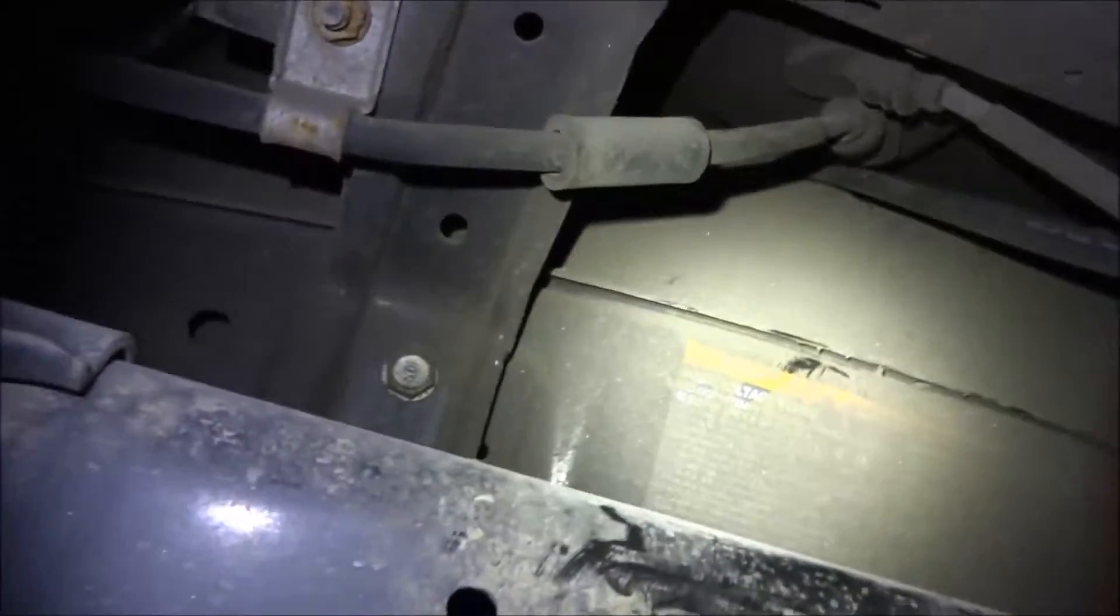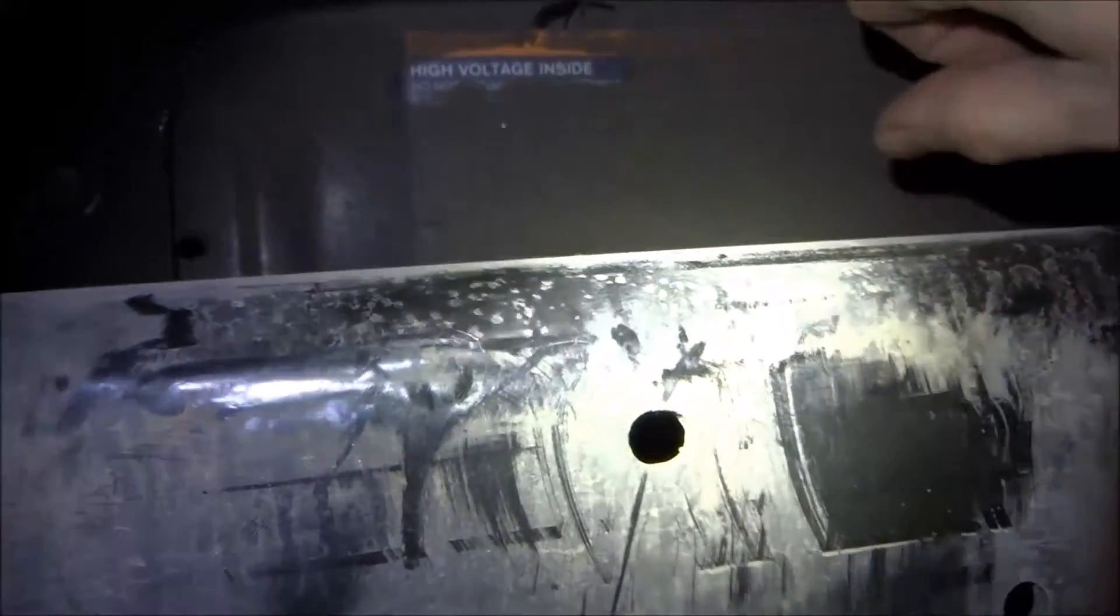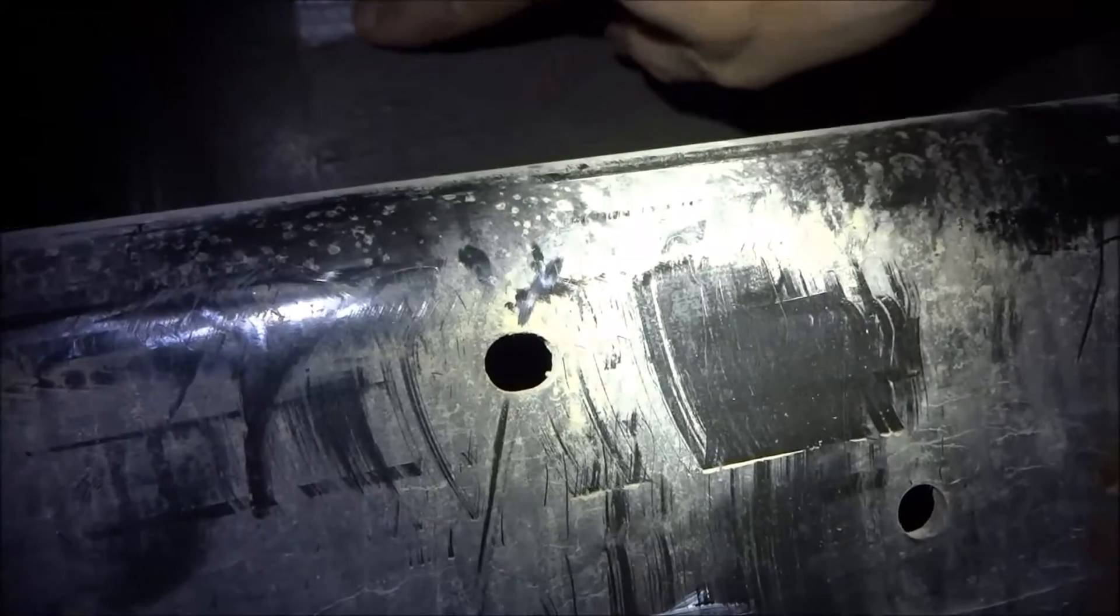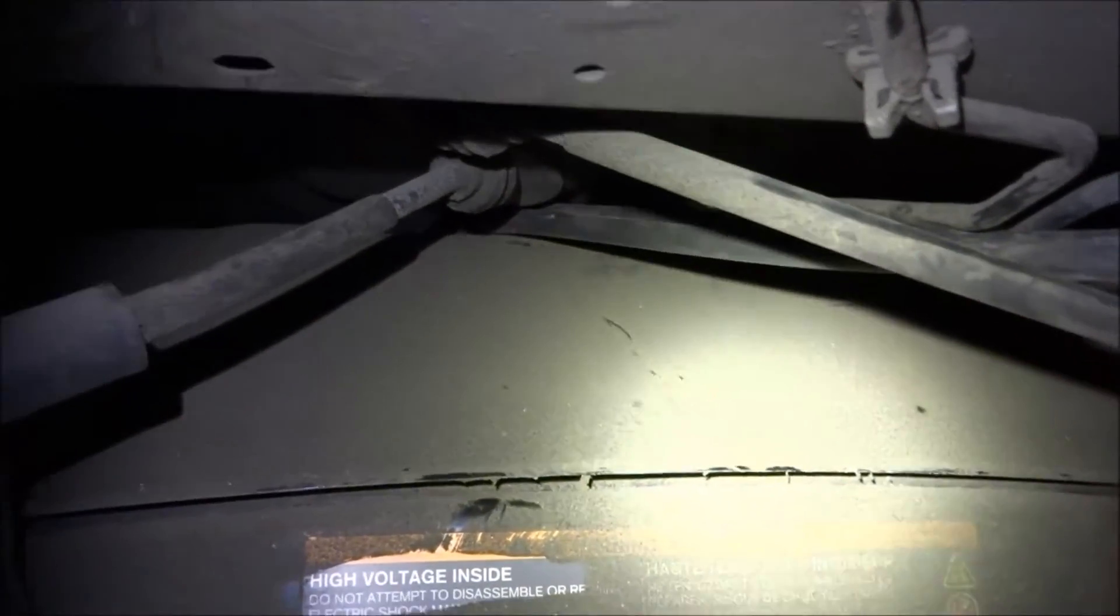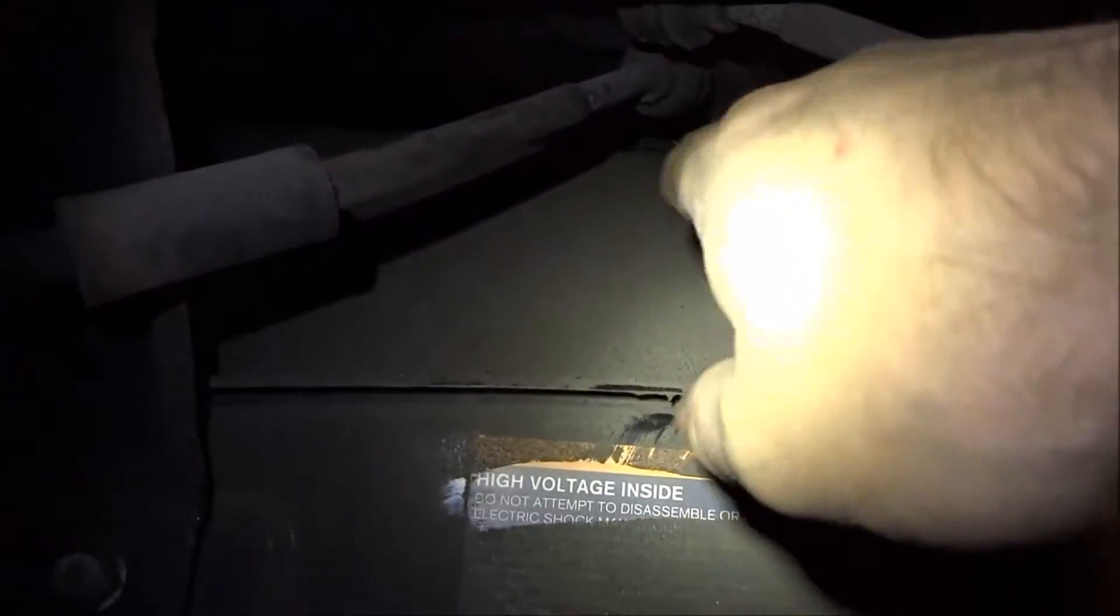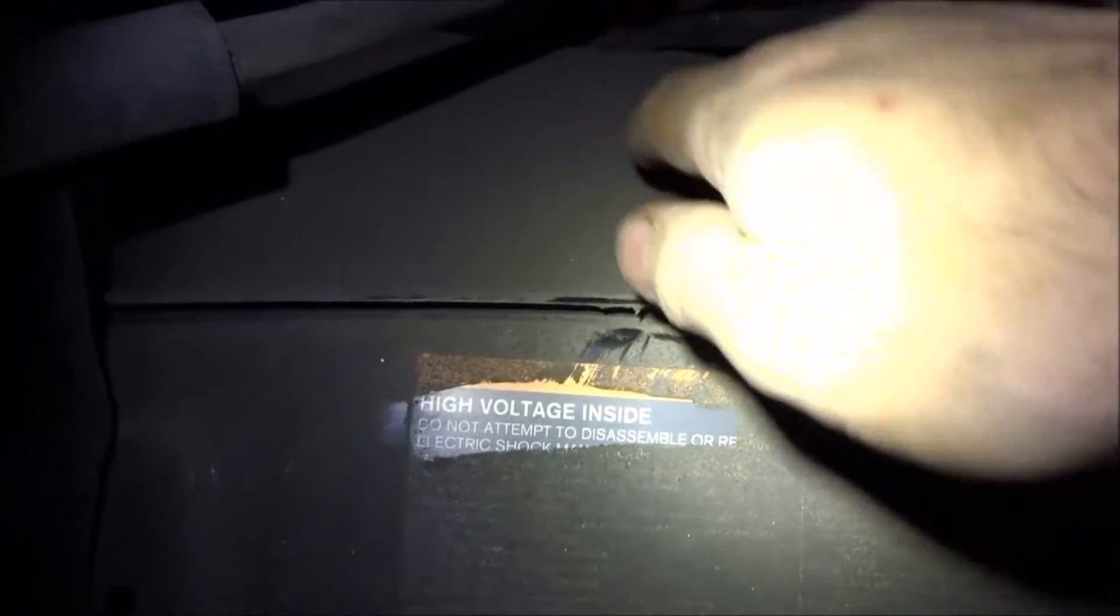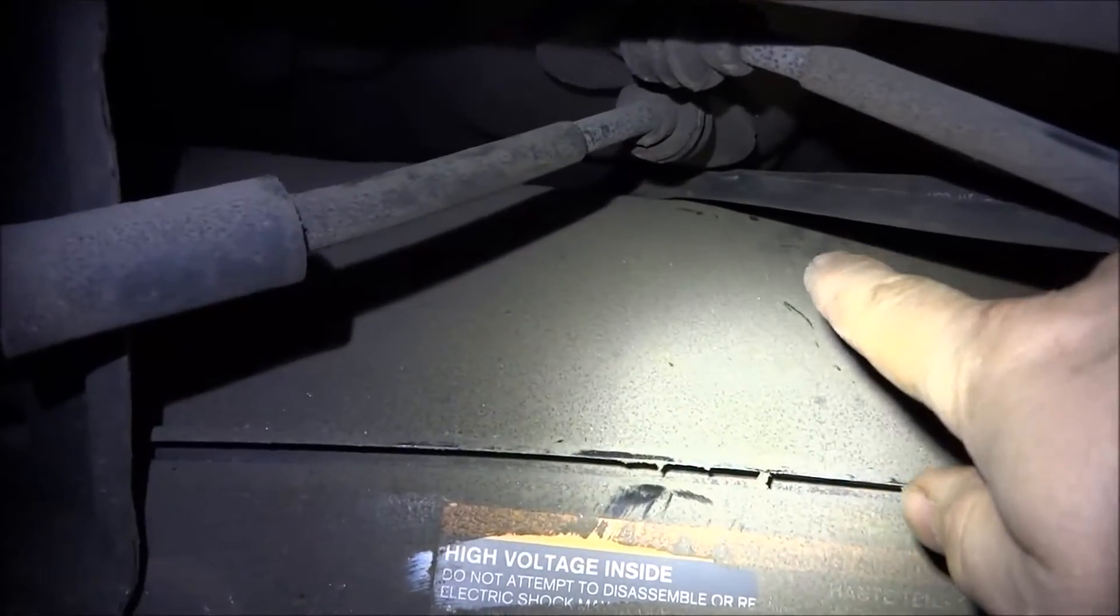Okay, so here we are at the back of the car. This is the high voltage battery pack. My two cables are coming in here, coming out of here. So that's the hump underneath the back seats.